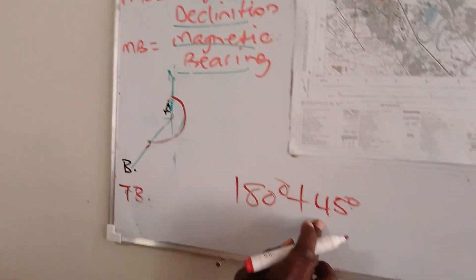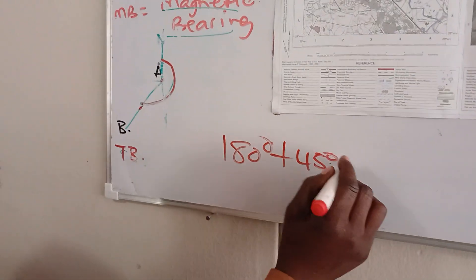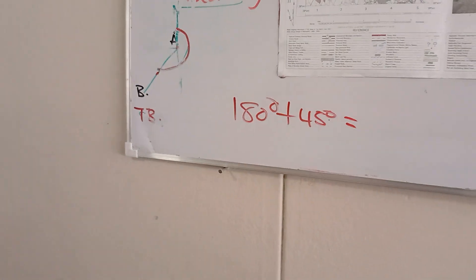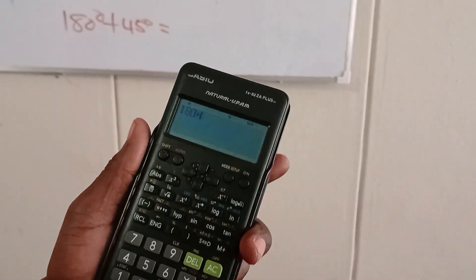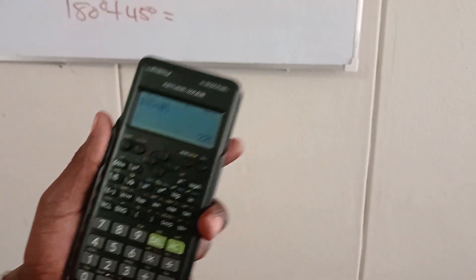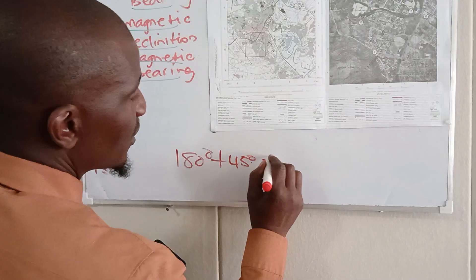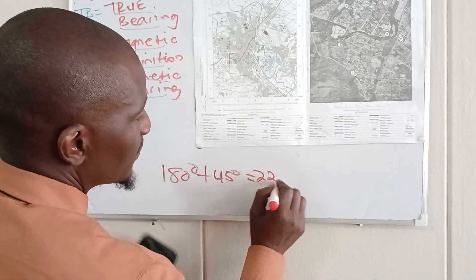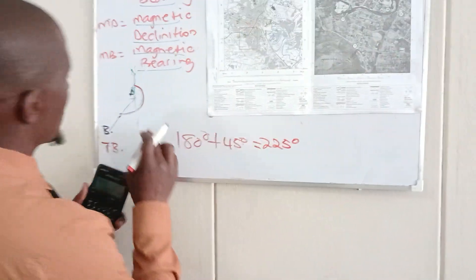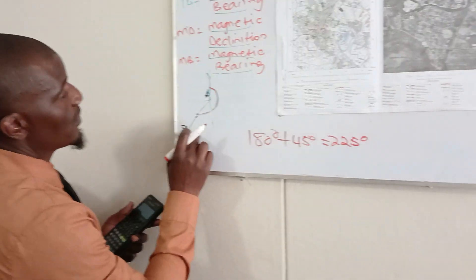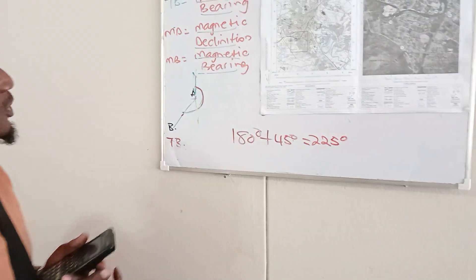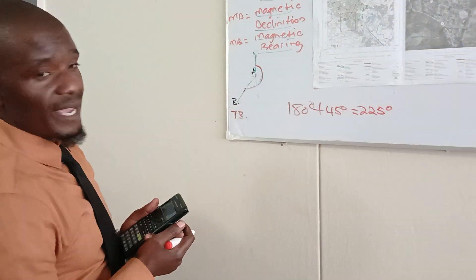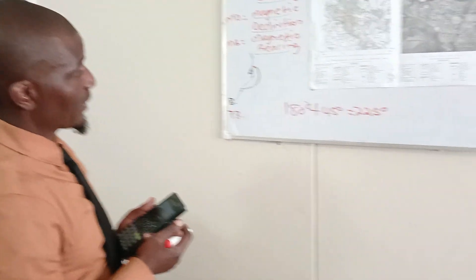I'm measuring from this line up to the point — somewhere around 45 degrees. I already have my 180 here, which is a straight line. So I'm going to add 180 plus 45, which gives me 225. Which means the true bearing of B from A is 225 degrees.